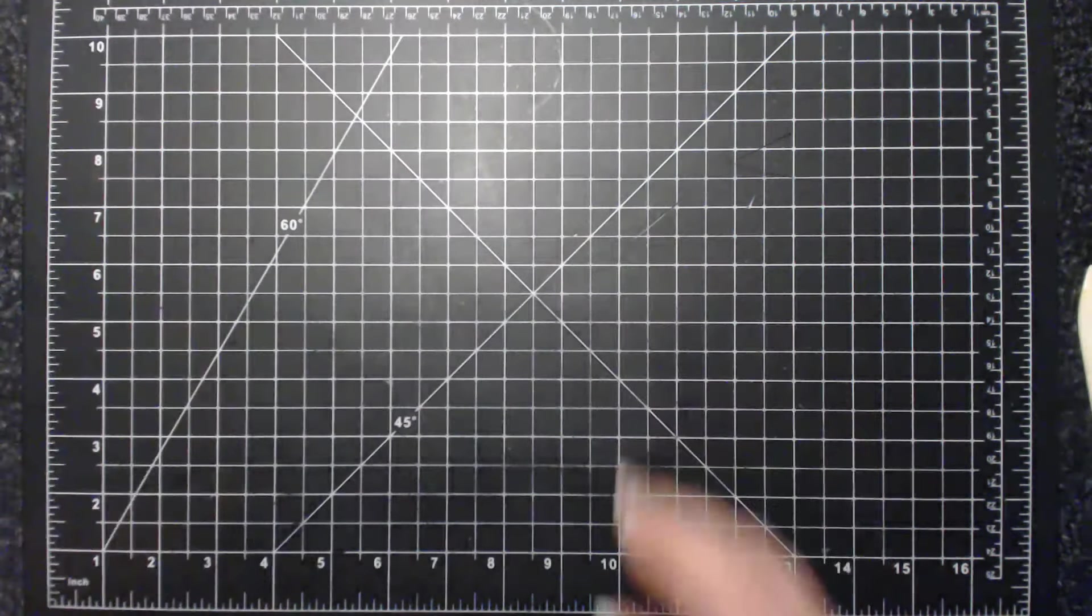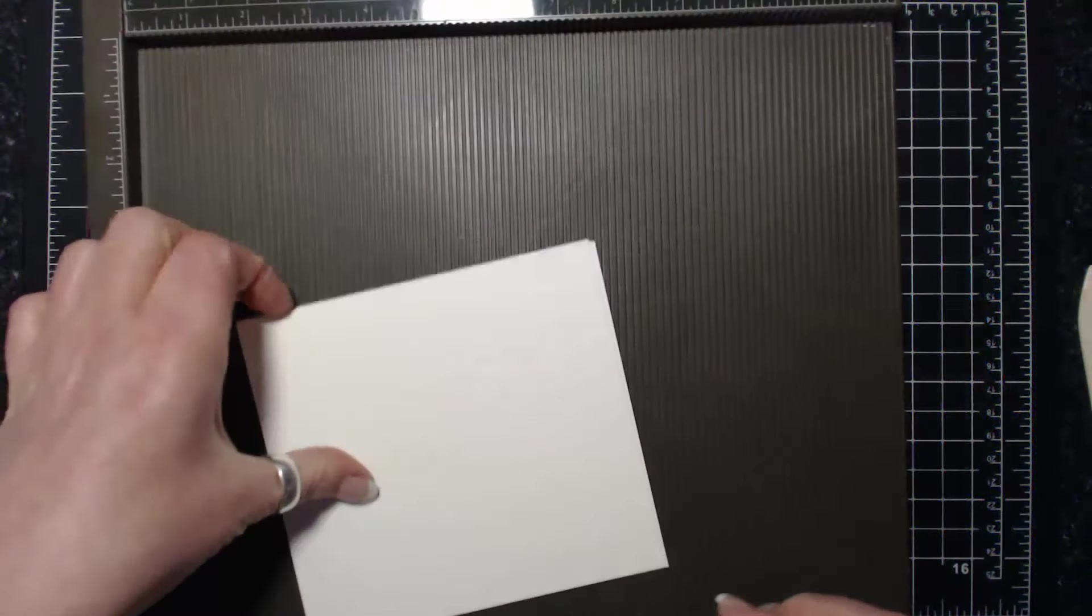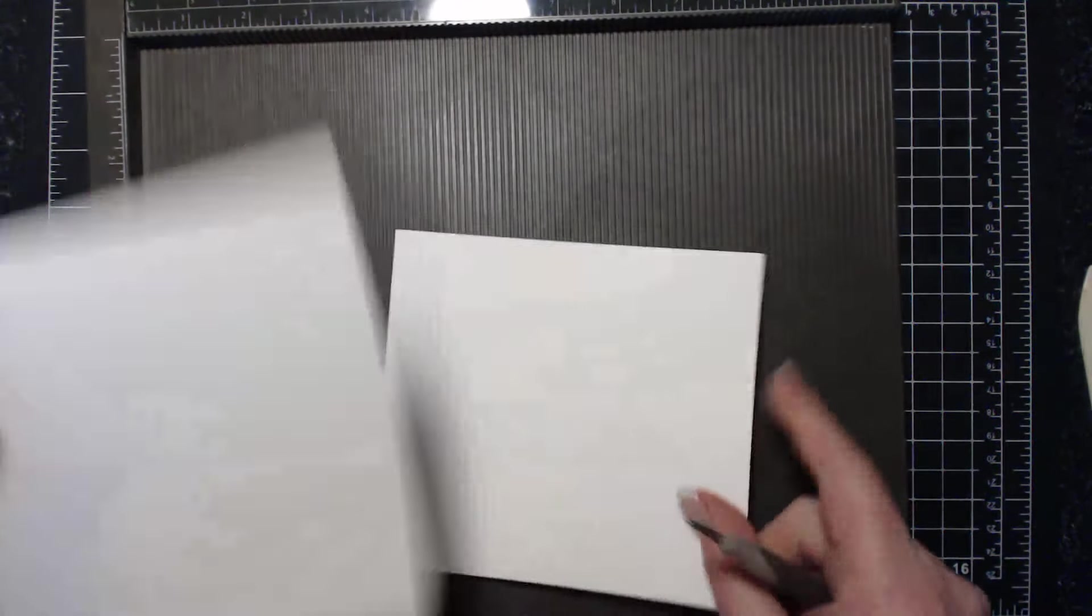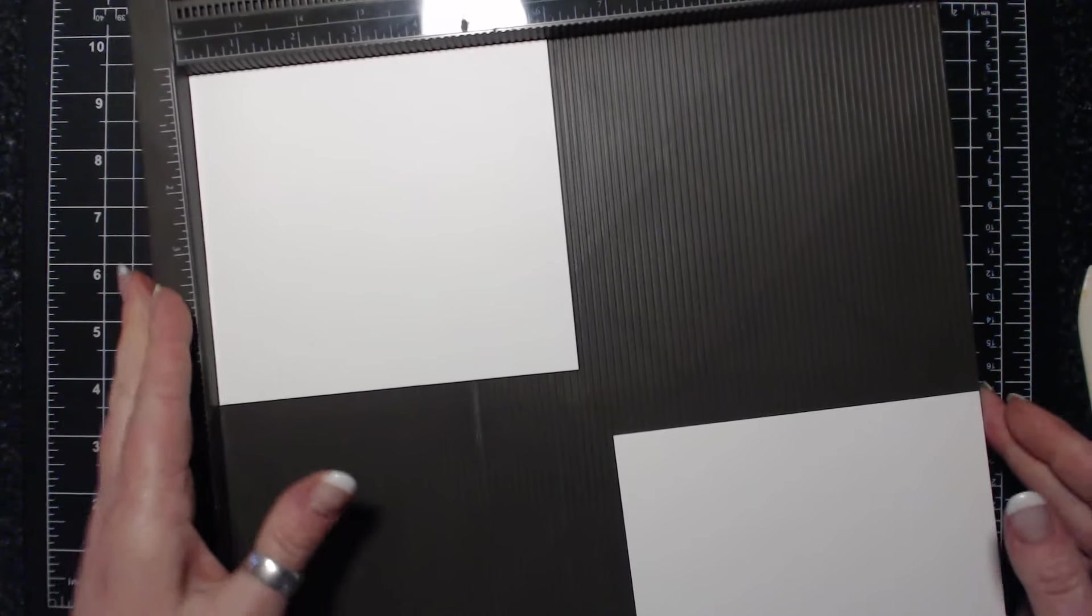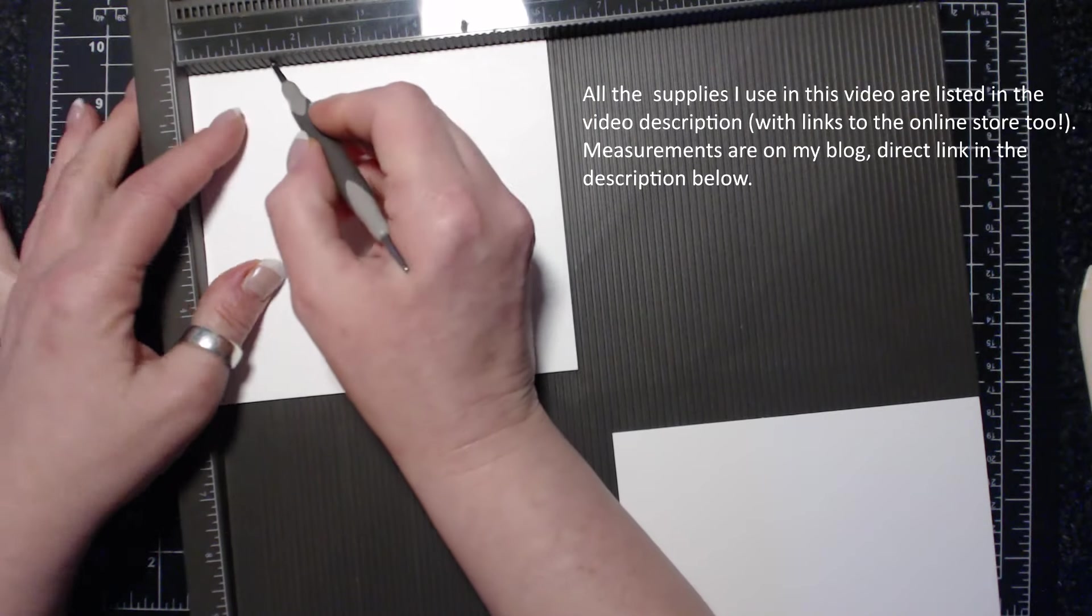I'm going to show you how to make it. You're going to need a scoreboard and two pieces of five and a half by six. We're going to score on the long side at one and a half and five and a half.